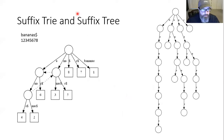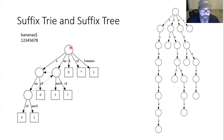Let's use our bananas example. Let's pick a string that would not be in 'bananas' — say N-A-R. Starting at the root and looking for N — there's N — then looking for A — there's A. We've gotten to the end of this edge, so we go to that node. Now we need an R. We look: is there an R down here? No R. So N-A-R must not be in this string.